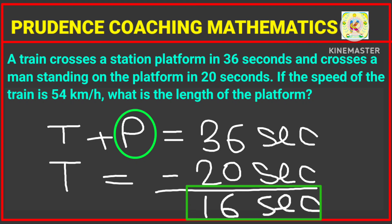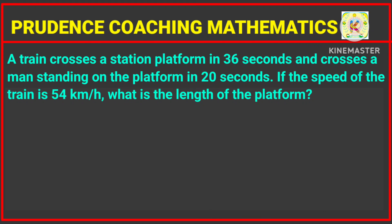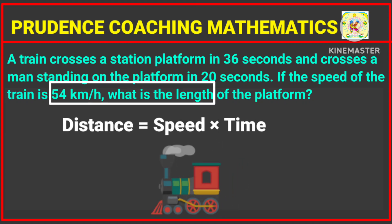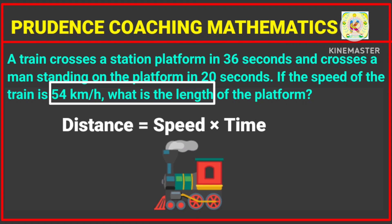The speed of the train is 54 kilometers per hour. To find the length of the platform, that is the distance, we use the formula: distance equals speed multiplied by time. The train is moving, so we take the speed of the train, that is 54 kilometers per hour.